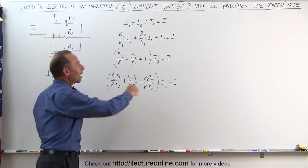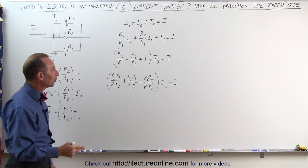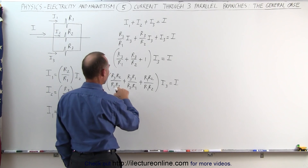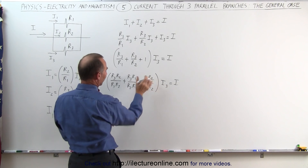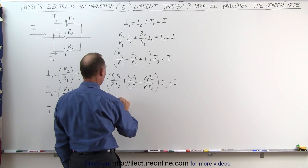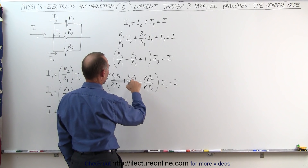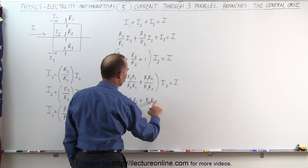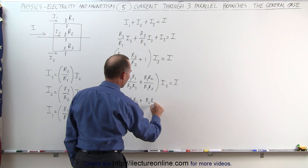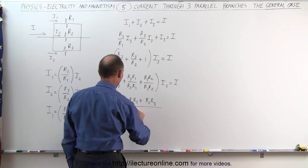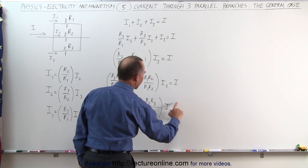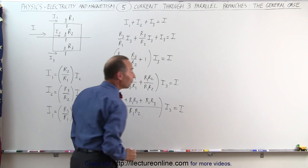Now we have a common denominator of R1 times R2 for all three fractions. Combining them and rearranging, we get: R1 times R2 plus R1 times R3 plus R2 times R3, all divided by the common denominator R1 times R2, multiplied times I3, equals I.